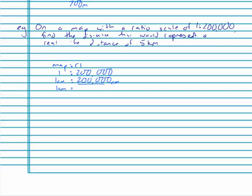One centimetre equals 200,000 centimetres. Centimetres to metres, divide by 100—2,000 metres. Much more sensible to say, divide by another 1,000—2 kilometres. So then, we need to look at our map to real life: 1 centimetre is 2 kilometres.